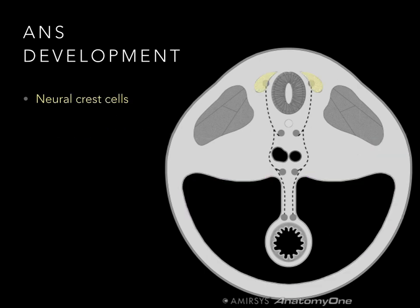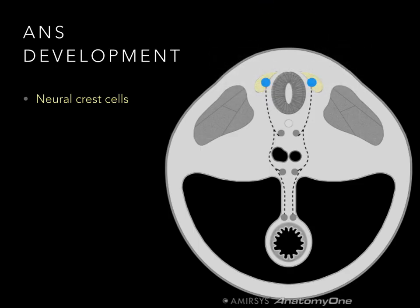In yellow, there are the neural crest cells. These neural crest cells then become all the peripheral nerve ganglia. I'll use blue dots to represent these neural crest cells.